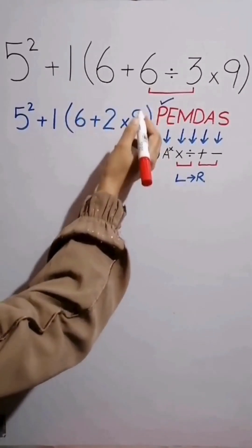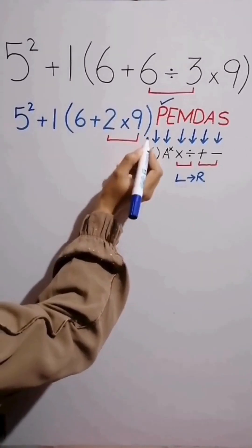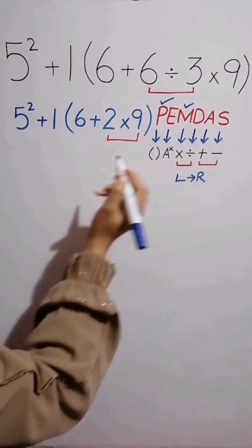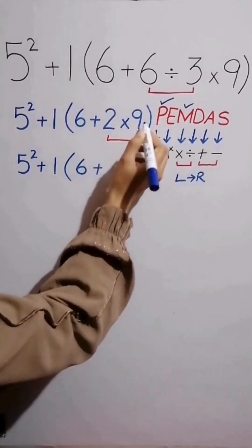Now, again we simplify the parenthesis. We have addition and multiplication inside the parenthesis. And first we simplify this multiplication because multiplication comes before addition. And 2 times 9 equals 18.